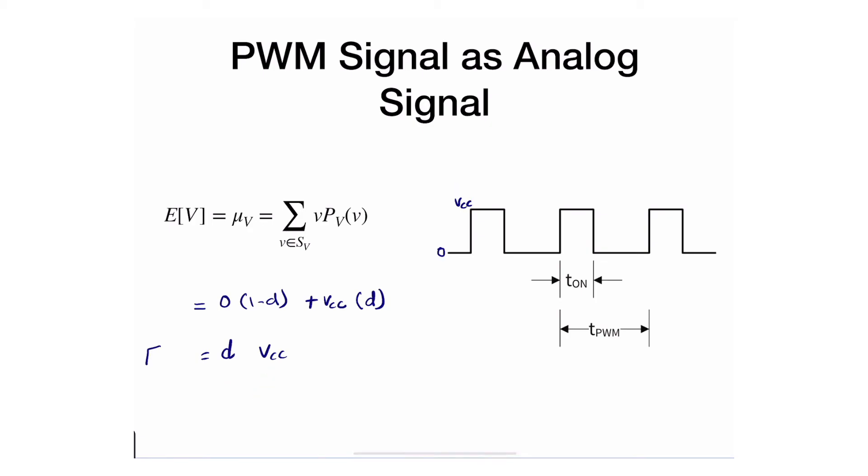So what do we have? Well, if you connect an analog device to this particular signal, that analog device will see an average voltage and that average voltage is exactly d multiplied by VCC. So if you change d between zero and one, because d is a proportion, you can get a signal that actually goes from zero all the way to VCC volts.